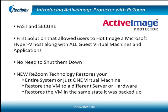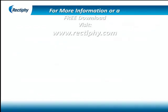Active Image Protector was the first solution that allowed users to hot-image a Microsoft Hyper-V host along with all guest virtual machines and applications without shutting them down. Now, in another industry first, its new resume technology can restore the entire system, or administrators can select just one machine to restore — and they will be restored to the state they were in at the time of the backup, even to a different server or hardware. Best of all, Rectify's Active Image Protector is affordable, saving you thousands over other tools that don't even offer this core functionality.